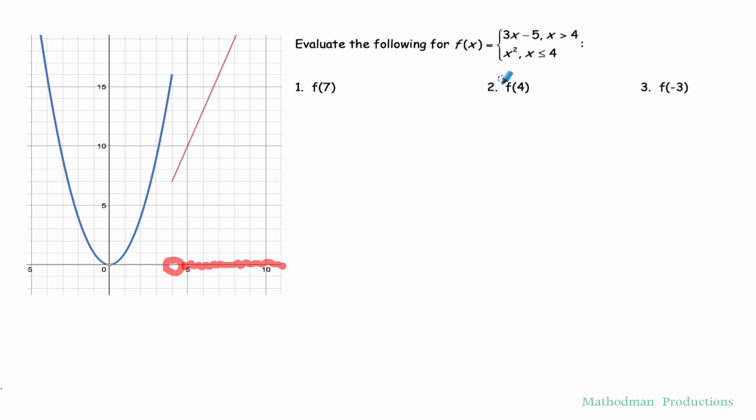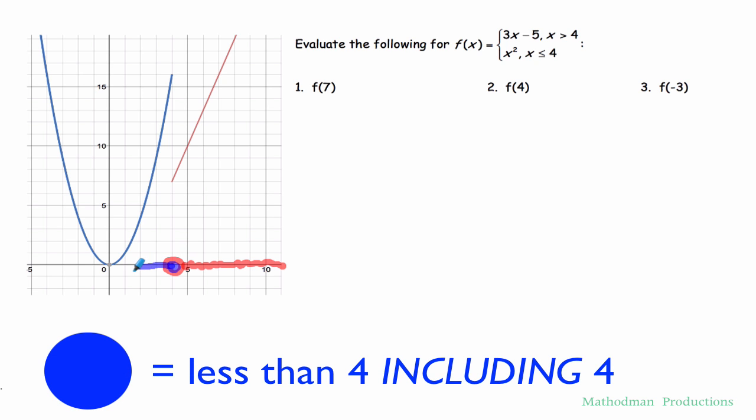Anywhere where it's equal to 4 or less, I'm going to use the function of x squared to evaluate my function. So closed circle meaning it could be 4 or less. I'm using x squared.